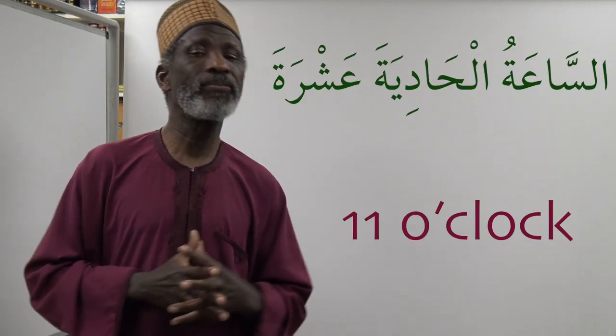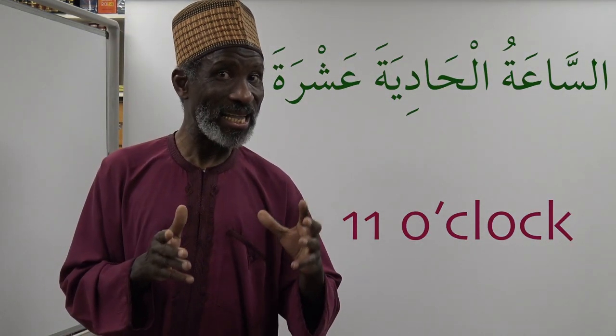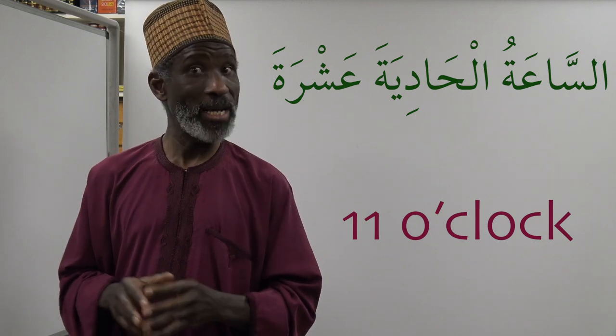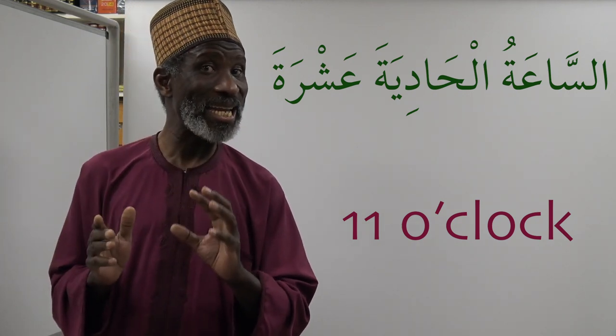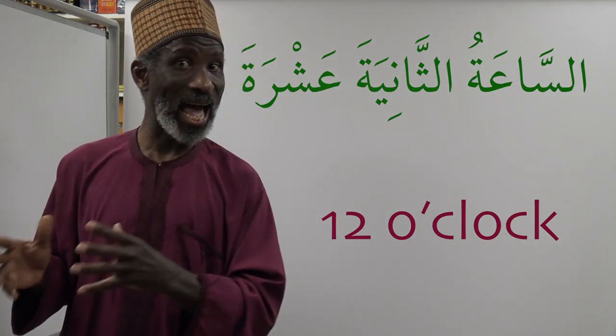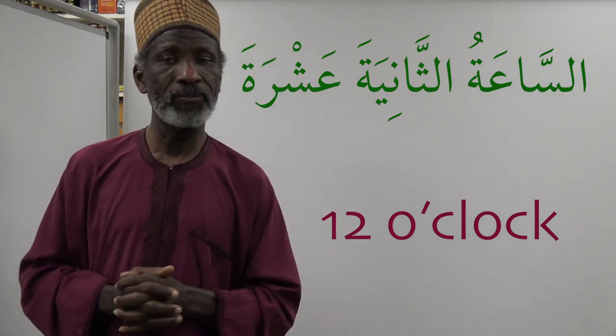Now, eleven o'clock — we use our ordinary numbers. Because 'sa'a' is feminine, we need the feminine form. So eleven o'clock is 'assa'atu al haadiyata ashirata.' Twelve o'clock is 'assa'atu al thaniyata ashirata.'